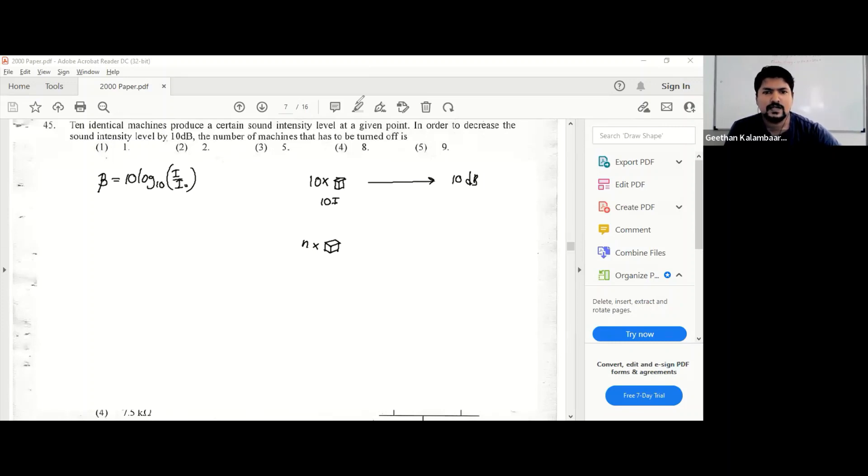To decrease it by 10 decibels, beta here when you have n identical machines is going to be beta minus 10. So we have nI. Applying the equation: beta equals 10 log 10I over I₀ - this is equation number one. Second equation: beta minus 10 equals 10 log nI over I₀.